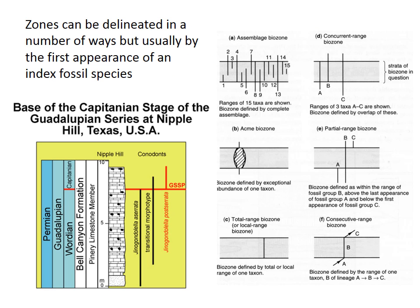There are a number of ways to define a zone. It can be based on the range of a single species, the range of co-occurring species, or maybe the abundance of a species — for example, the Acme biozone, based on the time when a species is particularly abundant.